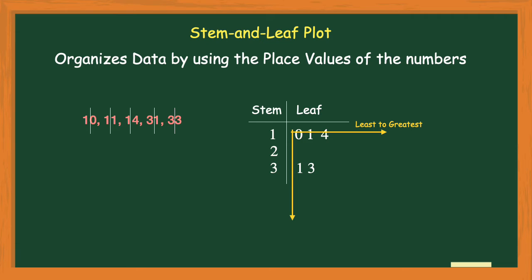There's one other important thing you have to have with a stem and leaf plot: a key. A key looks like this — I take a number from my data, such as 14, and in my key I put a 1 with a vertical line separating the 1 and the 4, and write that it equals 14. That's telling the reader that when you see it written like this in the stem and leaf plot, that is the number 14 — the stem is the tens place and the leaf is the ones place. Later in the video I'll show you how to use larger numbers and decimal numbers in a stem and leaf plot, and you'll see how important that key is.